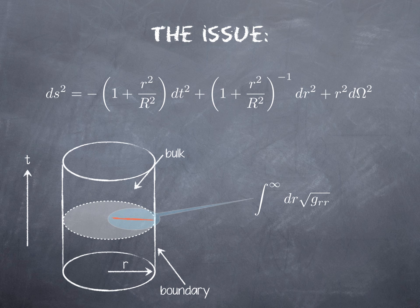What is g_rr? Well we just take it from the metric above and we look at this integral. Now g_rr goes as 1 over r squared as r goes to infinity. If we take the square root it goes as 1 over r and therefore we find that this integral diverges.